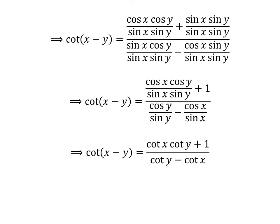Cot of x minus y is equal to cot of x times cot of y plus 1 upon cot of y minus cot of x.